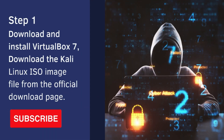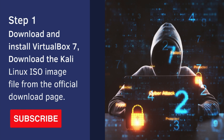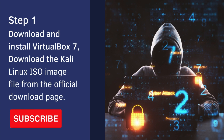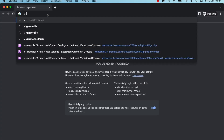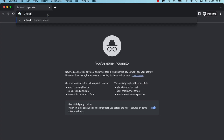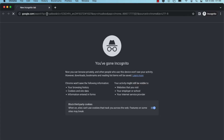The first thing I'm going to do is show you how to download VirtualBox version 7 and how to download the Kali Linux ISO image file. Open a new browser window and run a simple Google search for VirtualBox.